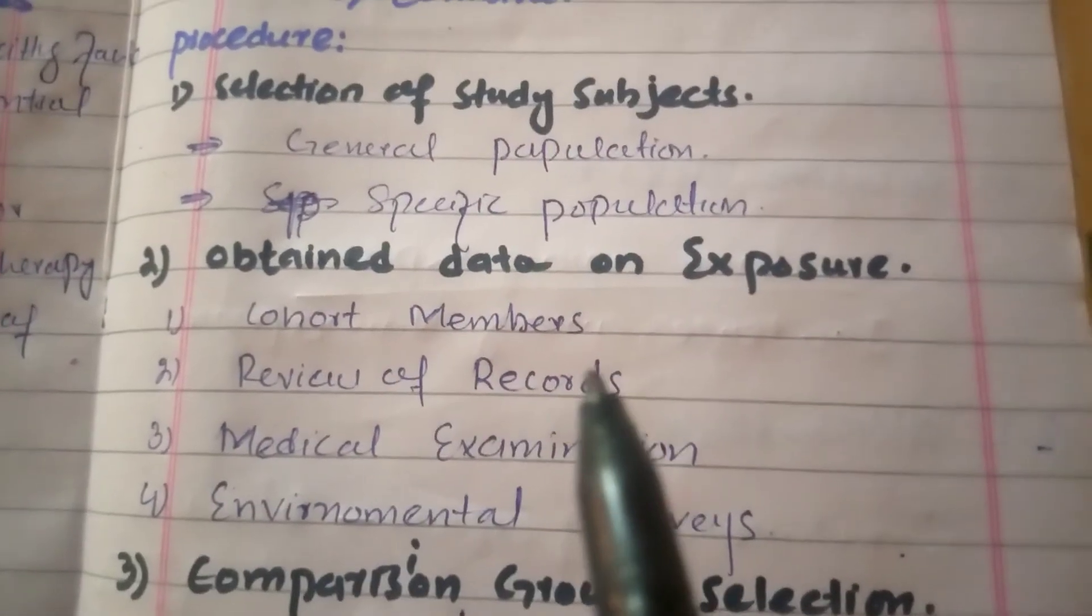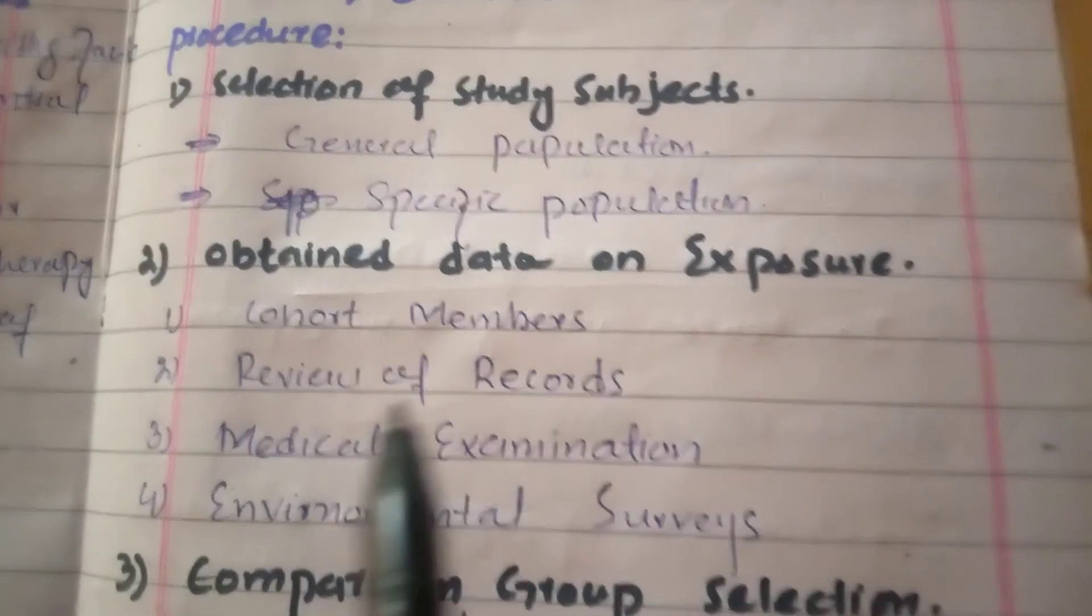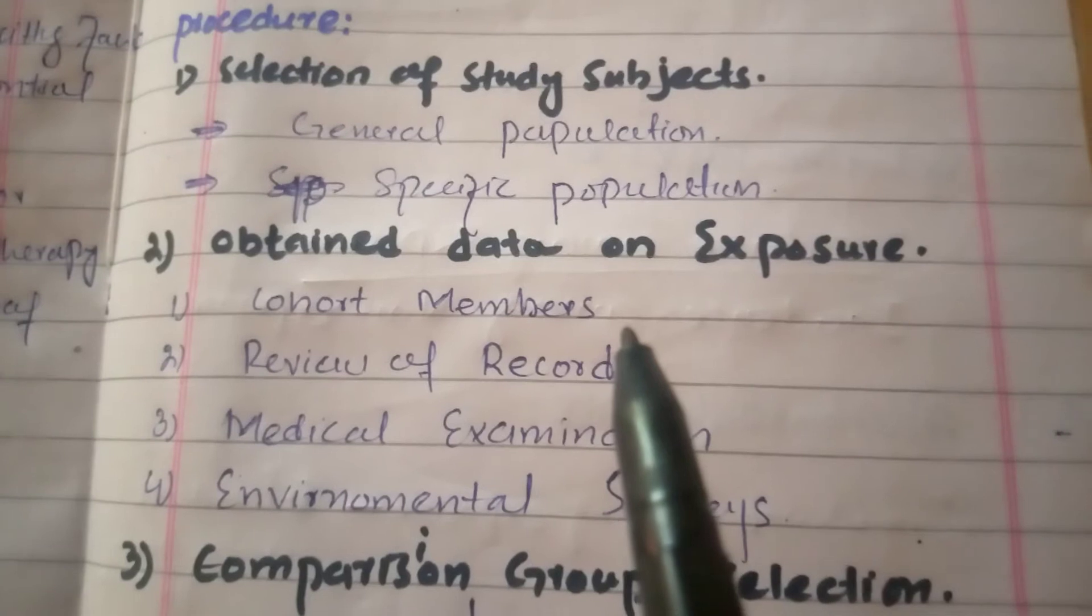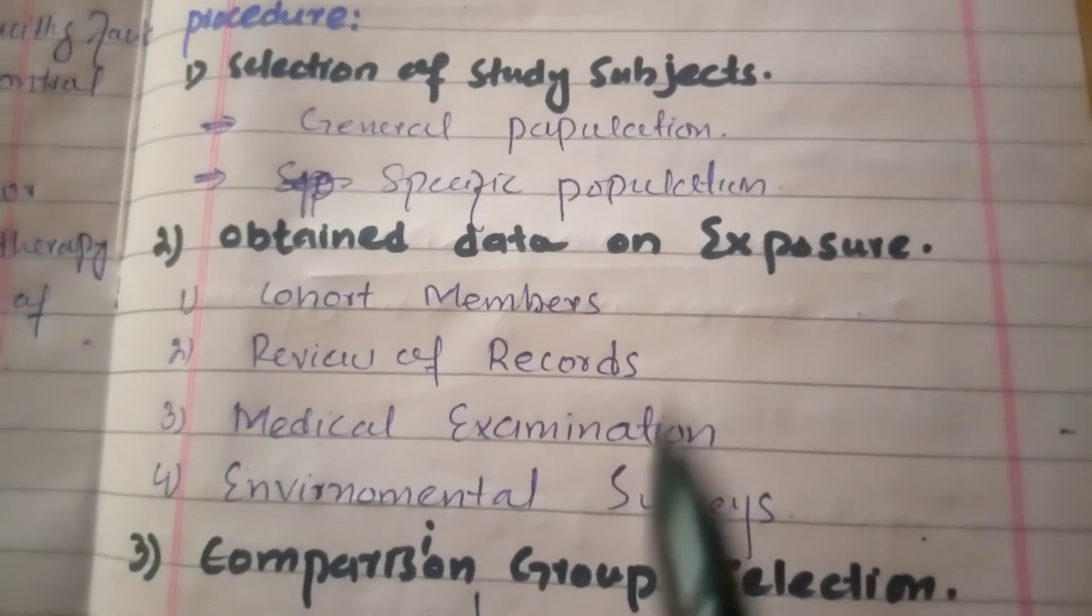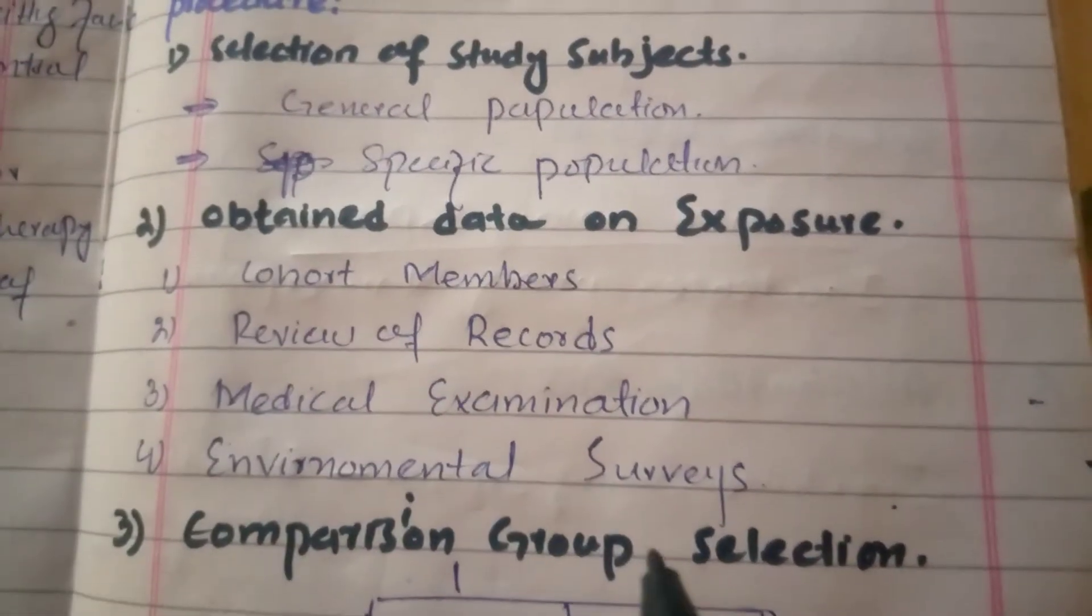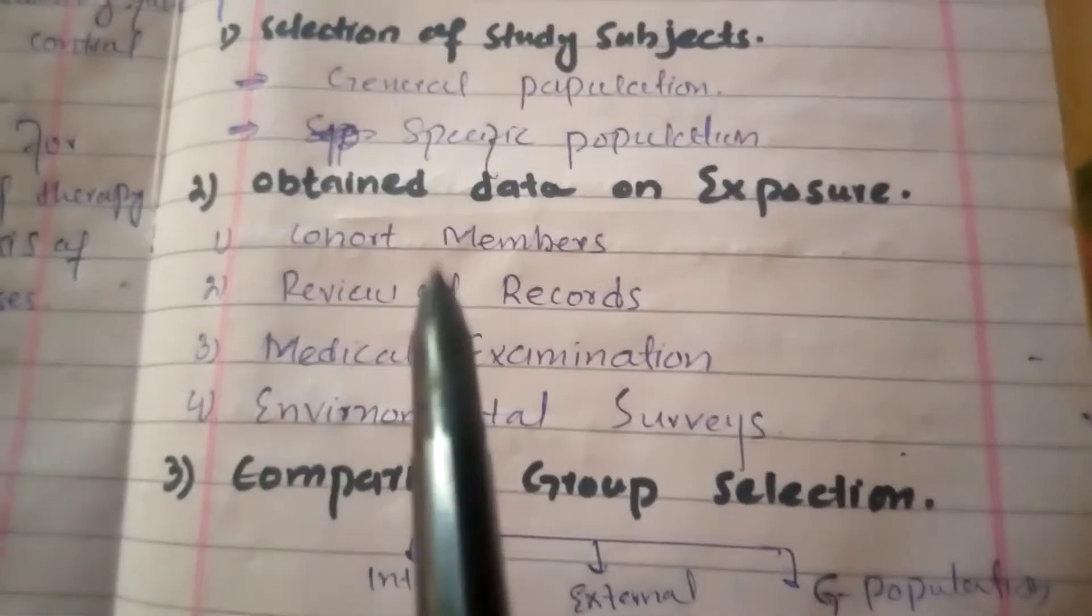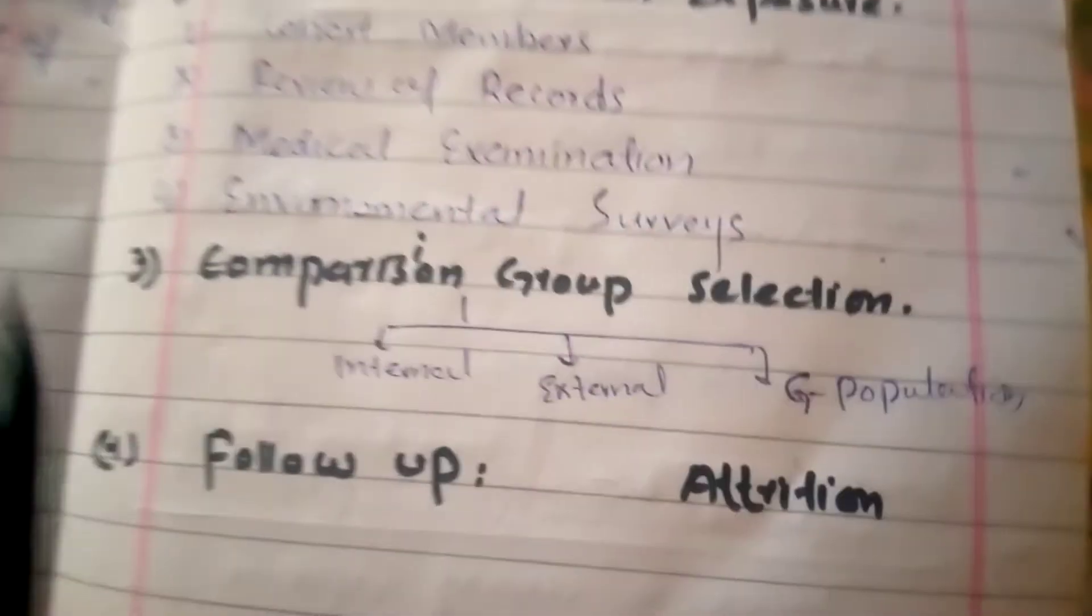Review of records - we can use medical records, medical examinations, or environmental surveys. We can use this environment which we can study. Then comparison group selection.